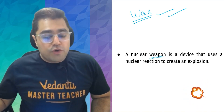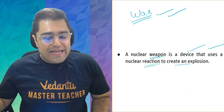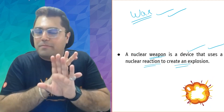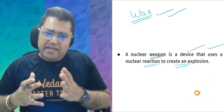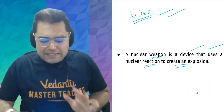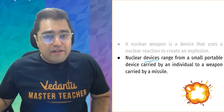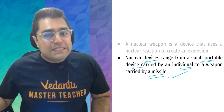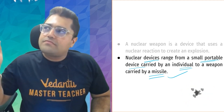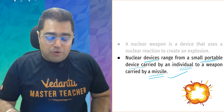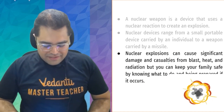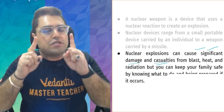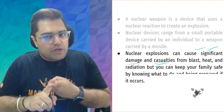Nuclear weapon wo hota hai that uses a nuclear reaction. Nuclear reaction mein fission reaction or fusion reaction hoti hai — wo sab hum nahi ghusenge. Nuclear devices ya bombs range from a small portable device carried by an individual to a weapon carried by a missile — matlab ek insaan bhi carry kar sakta hai. Generally toh rocket ya missile se hota hai, but bhoat zyada dangerous aur scary hota hai. Nuclear explosions beta can cause significant damage and casualties.